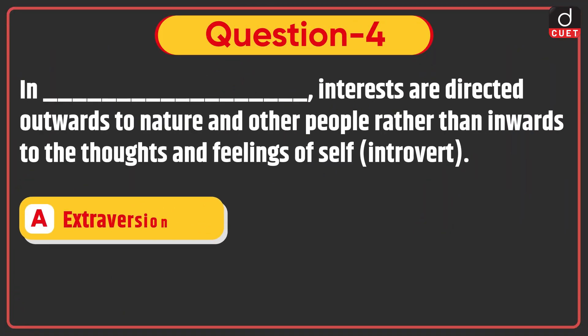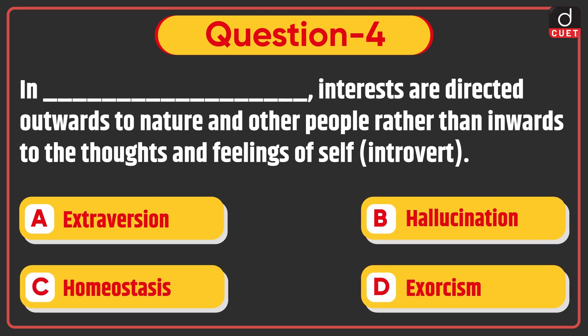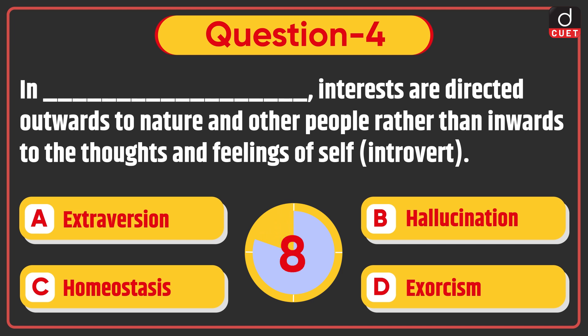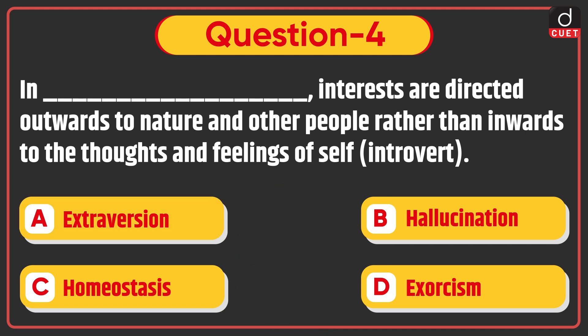Next question: Dash — interests are directed outwards to nature and other people rather than inwards to the thoughts and feelings of self — or Introvert. Options: Extraversion, Hallucination, Homeostasis, or Exorcism. The correct answer is option A, Extraversion.